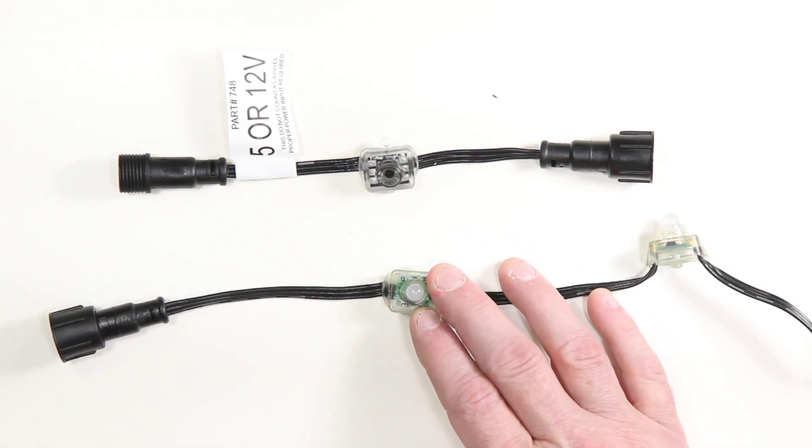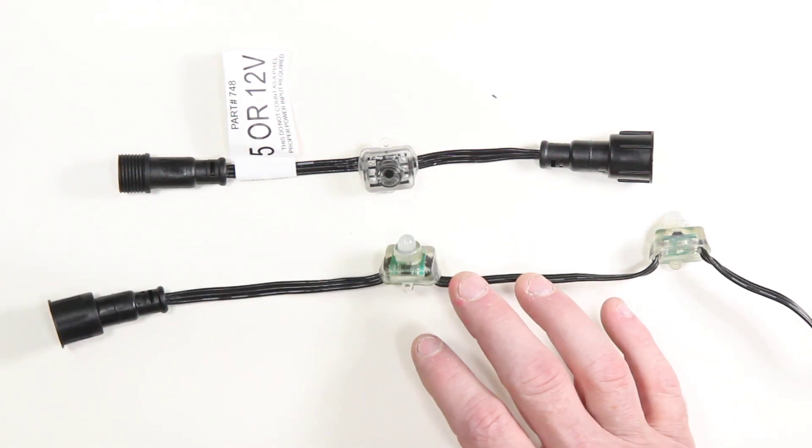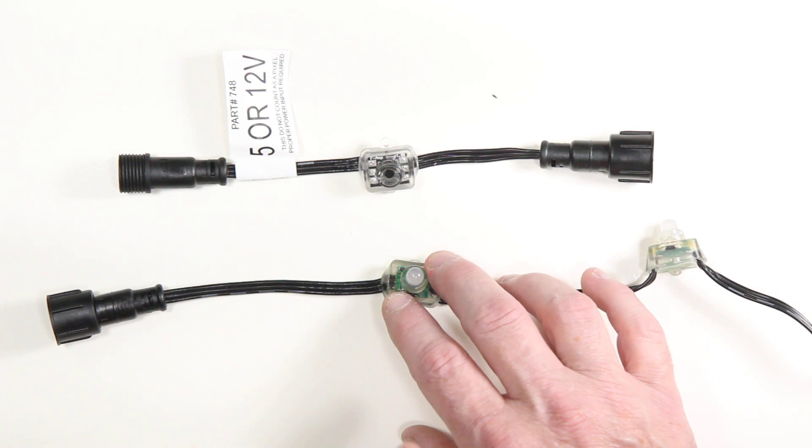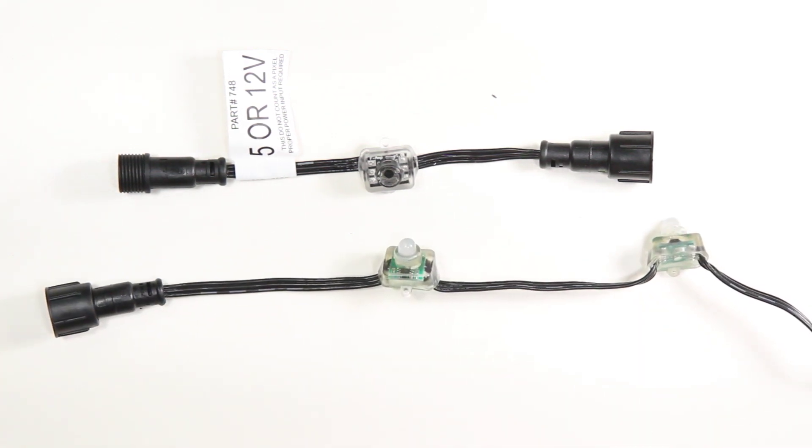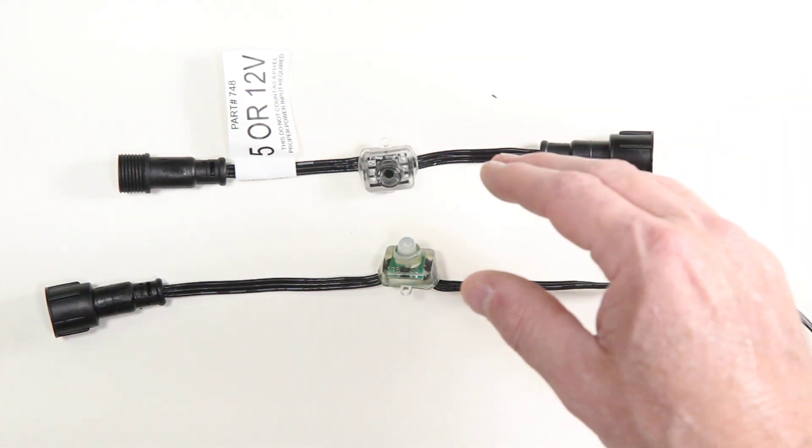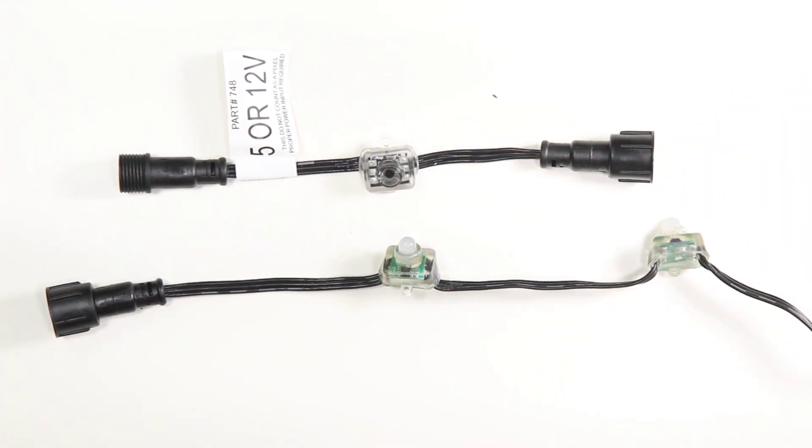This is why if you've ever held 12 volt pixels, you'll notice they're warm, because the vast majority of pixels use what are called dropping resistors, a very simple process where we waste energy in the process of dropping it from a higher voltage to a lower voltage.